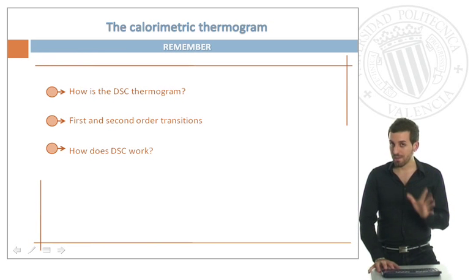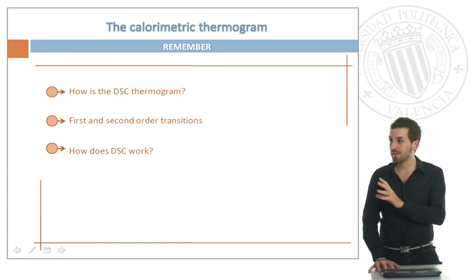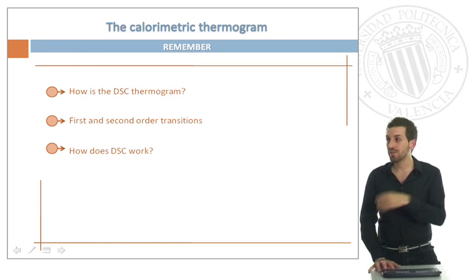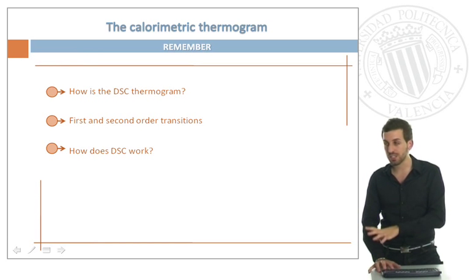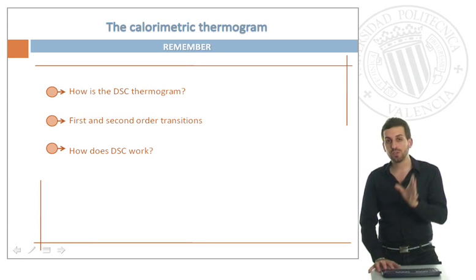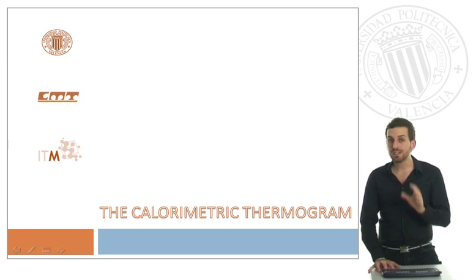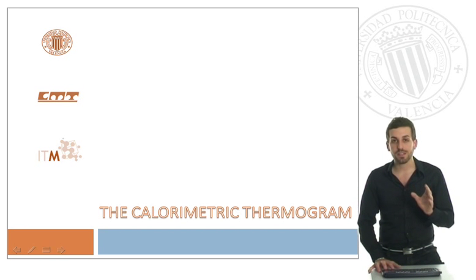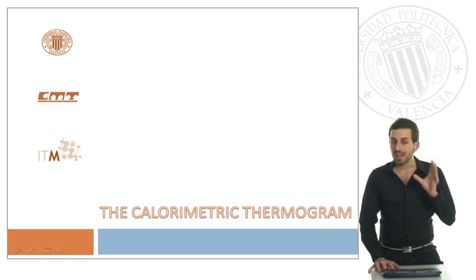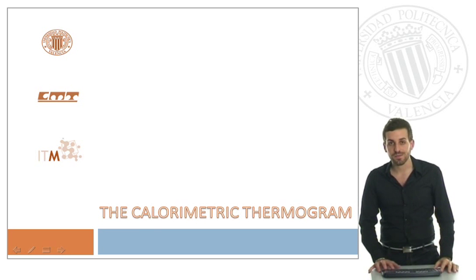Remember what we have seen: how a DSC thermogram looks, and we have distinguished between first- and second-order transitions. Finally, we have related these transitions to how our DSC is working internally. Now it's time to evaluate and understand your results, relating everything you have learned from this presentation. Thank you.